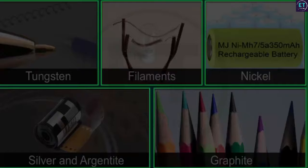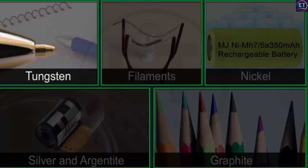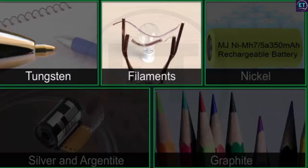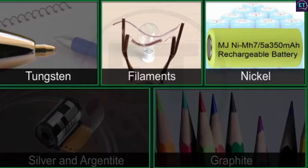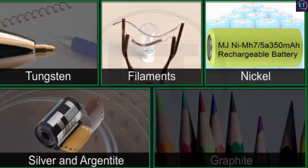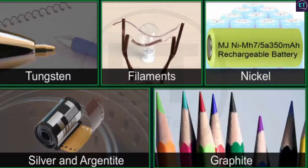Other examples of minerals utilized in articles of daily use are tungsten in ballpoint tips and filaments in light bulbs, nickel in rechargeable batteries, silver and argentite in photographic films, and graphite in pencils.